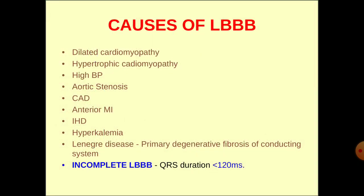Coming to the causes of Left Bundle Branch Block, they include dilated cardiomyopathy, hypertrophic cardiomyopathy, hypertension, aortic stenosis, coronary artery disease, anterior myocardial infarction, ischemic heart disease, hyperkalemia, and Lenegre's disease — that is primary degenerative fibrosis of the conducting system.